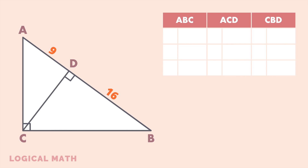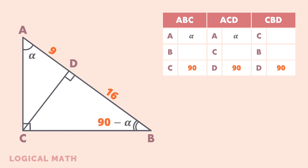As all triangles are right, one angle in each triangle is 90 degrees. Mark angle A as alpha. Then angle B is equal to 90 minus alpha. Angle C in triangle CBD equals alpha, and angle B in triangle ACD equals 90 minus alpha.